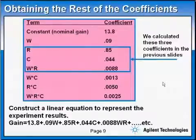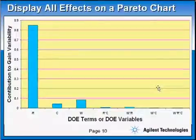We do the same thing to all the components. And you can construct a linear equation that represents these experimental results. So we can say our gain is 13.8 dB which is the nominal value we calculated early on, plus 0.09W because the factor here is positive, plus 0.85R. Sometimes you get a negative number, you could get a negative slope, but in our case here we get positive slopes. Plus 0.044C plus etc. You just construct a whole equation here that would give you a lot of information on the gain versus the variation in all the components you chose.